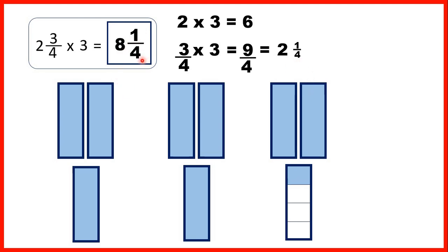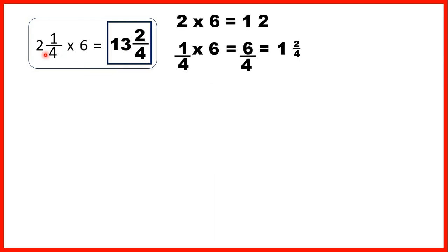Now let's look at the other question: 2 and 1 quarter times 6. We did 2 times 6 to get 12, and we did 1 quarter times 6 to get 1 and 2 quarters, and then we added up our answers to get 13 and 2 quarters.